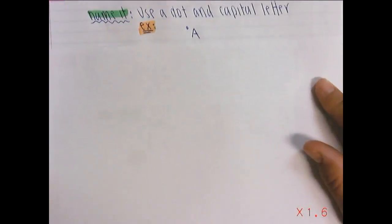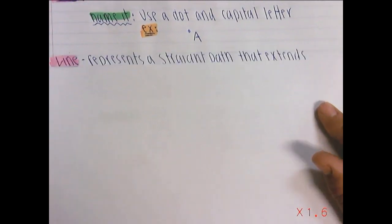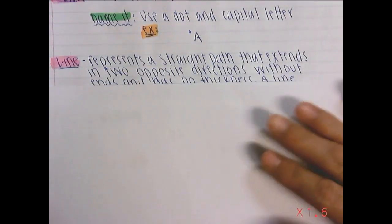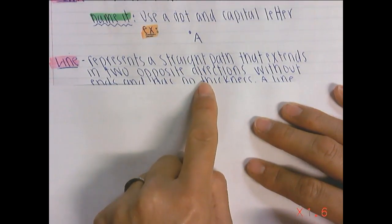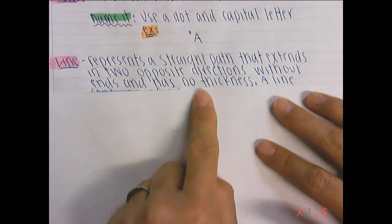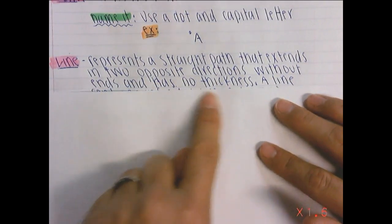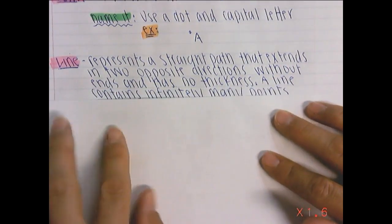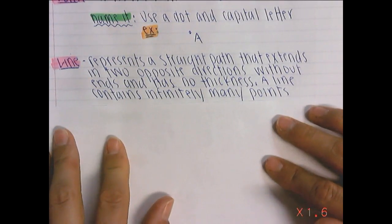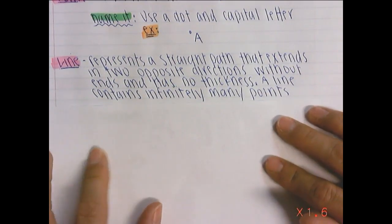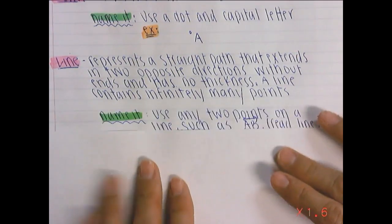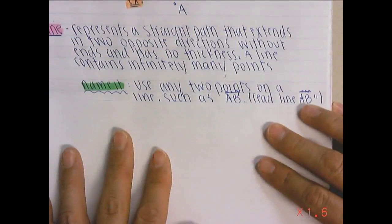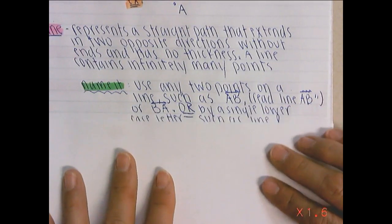The next one, as we move along, would be a line. It represents a straight path that extends in two opposite directions without ends and has no thickness. A line contains infinitely many points. So when we talk about naming a line, you can choose any of those points and name it.